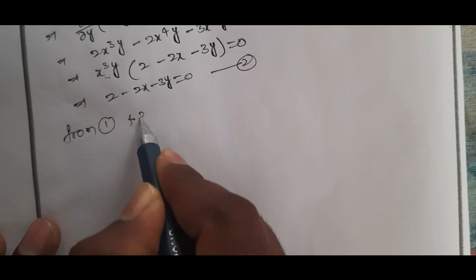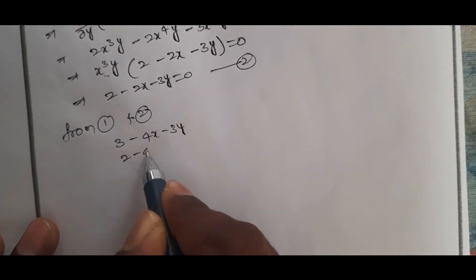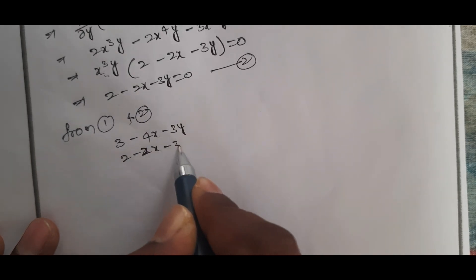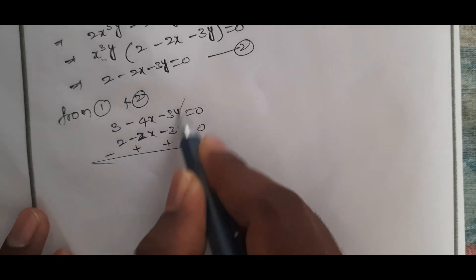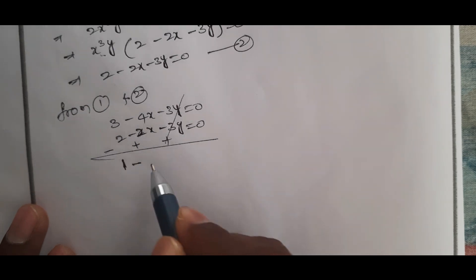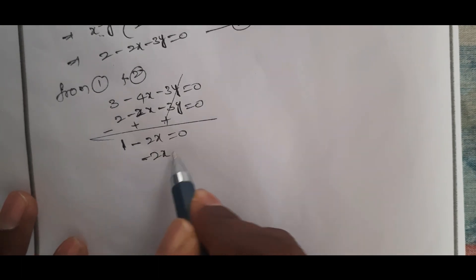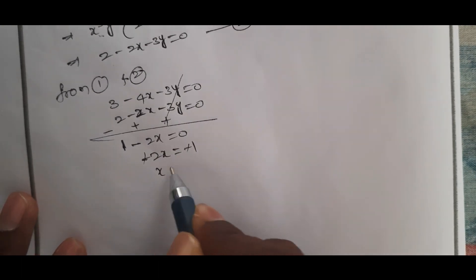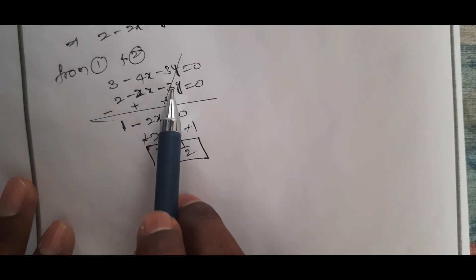From equations 1 and 2: 3 - 4x - 3y = 0 and 2 - 2x - 3y = 0. Subtracting equation 2 from equation 1: 1 - 2x = 0, so x = 1/2.